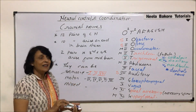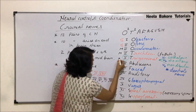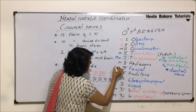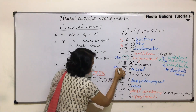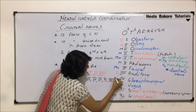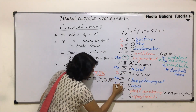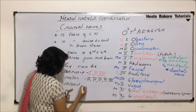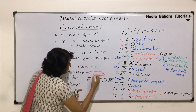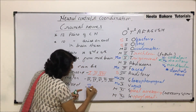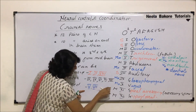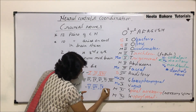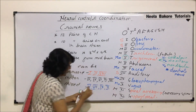The remaining ones are mixed nerves — that is, the fifth, seventh, ninth, and tenth cranial nerves. Let us verify the count: three are sensory, five are motor, and four are mixed, giving us all twelve cranial nerves accounted for.